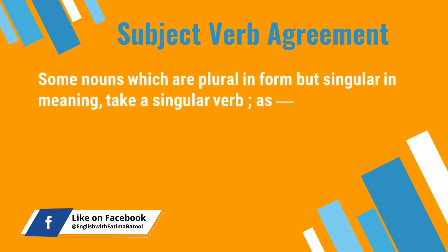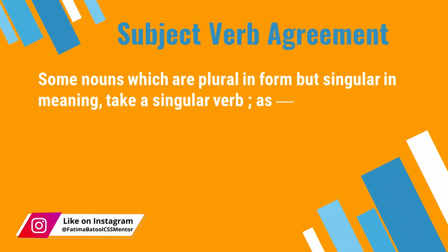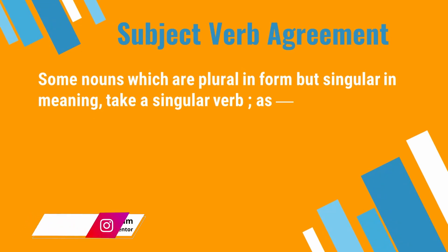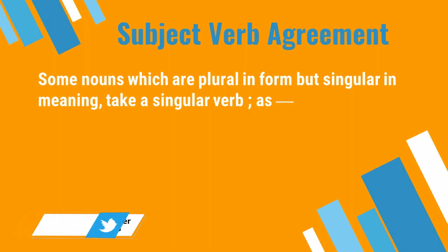Abhi tak, jab hum subject-verb agreement ki baat kar rahe the, hum yeh dekh rahe the ke number mein subject aur verb ka agree karna zaruri hai. Lekin ab hum kuch aise lafzon ke saamne khare hain jo ke maani mein toh singular hain — yani baat ek shakhs ki ya ek cheez ki ho rahi hai — lekin jab hum unke spelling dekhte hain toh woh plural hain. Singular plural ka jo farq hai woh S ya ES ka hota hai buniyadi taur par.